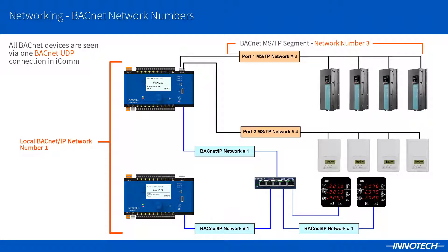As additional BACnet network segments are created — in this case by adding a new MSTP connection to the Omni controller — the network number must be checked and configured. In this example, I have assigned network number 4 to the new segment. All the BACnet devices will be discovered via the BACnet connection in ICOM.